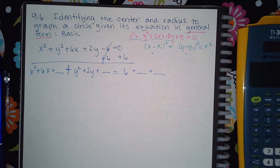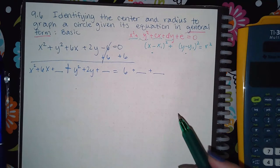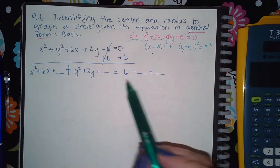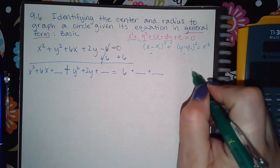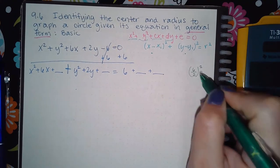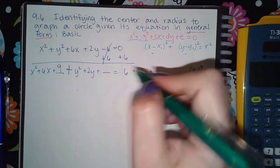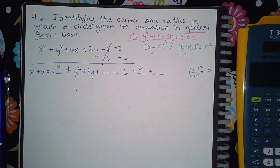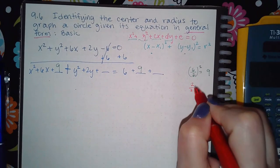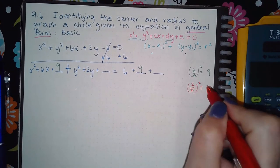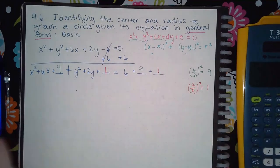Come to the side and figure out what numbers to add to both sides. For the x terms, take 6 divided by 2, which is 3, then square it to get 9. So 9 is the number added on both sides to complete the square for x. For the y terms, take 2 divided by 2, which is 1, then square it to get 1. So we add 1 to both sides.